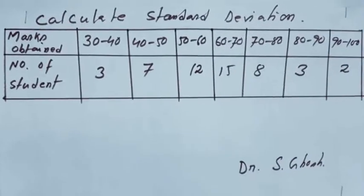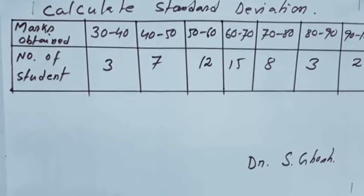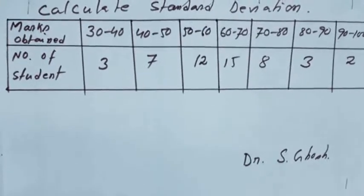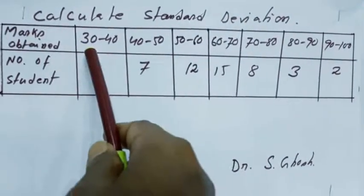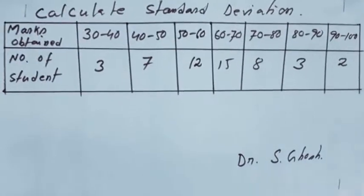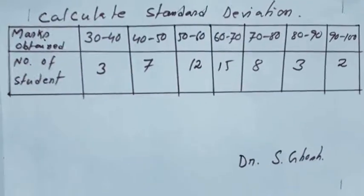So, for that, we have seen in earlier also, in calculating the weighted mean, or also the median and the other mean, we convert this class interval into a fixed value by taking their average.